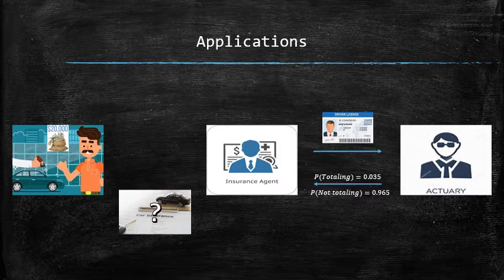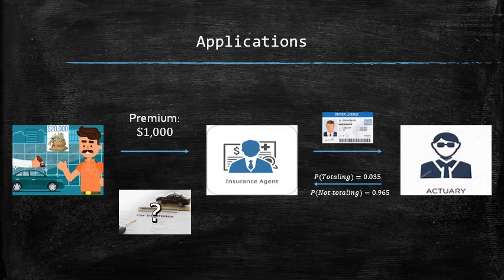Let's say that Bobbert ended up purchasing the policy for a lump sum of $1,000 called the premium. And in exchange, he received an assurance that in case of him totaling the car, he will get paid $20,000.